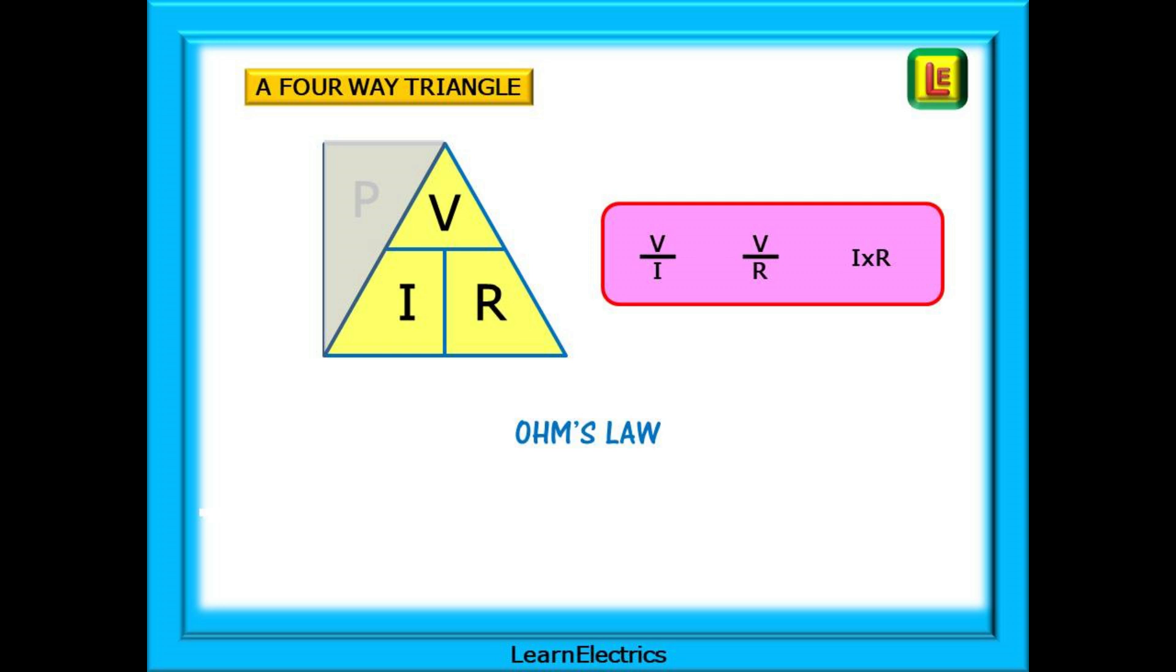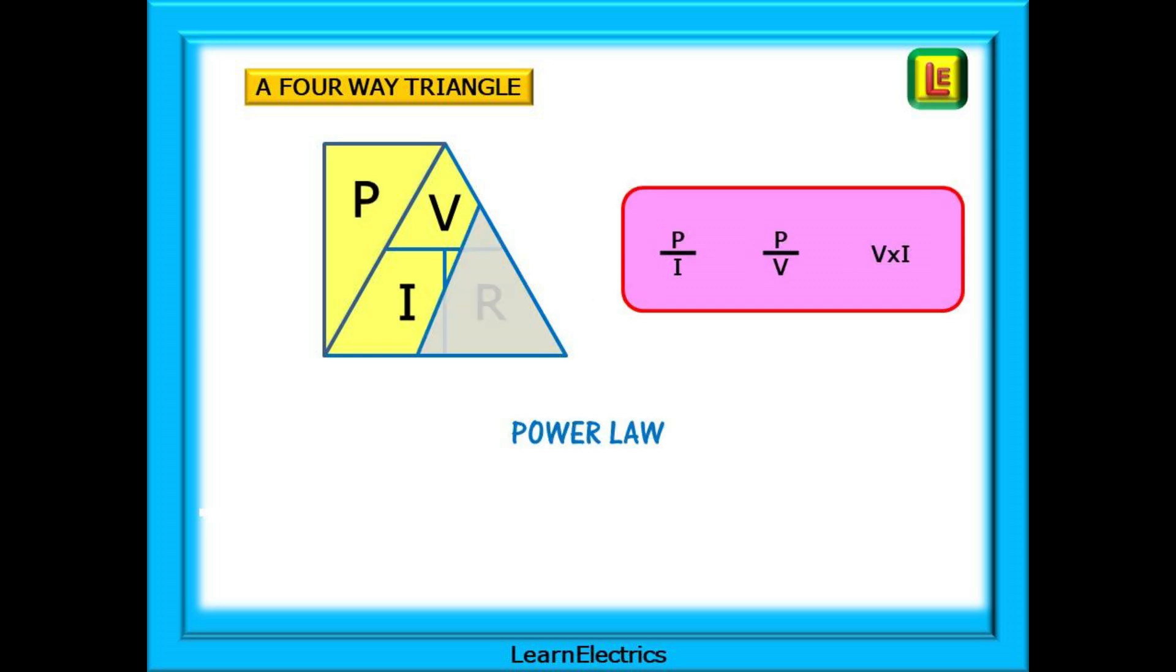Shown here are the three calculations that we can perform with Ohm's Law. If we cover the R for resistance, we are left with a sort of triangle on its side, and I think you can see that this is the power triangle. Shown in the box are the three calculations that are possible from this triangle.